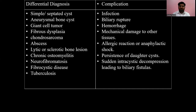Differential diagnosis for hydatid cysts includes simple cysts, aneurysmal bone cysts, giant cell tumor, fibrous dysplasia, chondrosarcoma, abscess, lytic sclerotic bone lesion, chronic osteomyelitis, neurocysticercosis, fibrocystic disease, and tuberculosis.